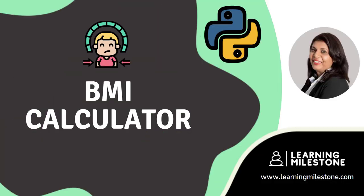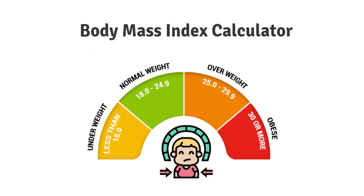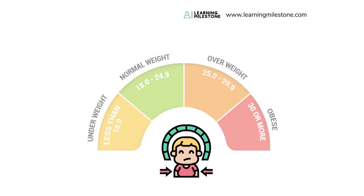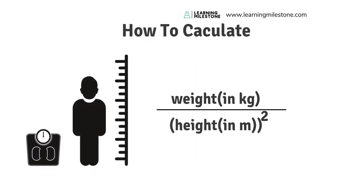Hey friends, you're with me Anuradha from LearningMilestone.com, and here we are going to create a simple BMI calculator based on Python. What is a BMI calculator? It is an indicator which tells adults whether they are underweight, normal weight, overweight, or obese. That is based on a certain value calculated using a formula based on the user's weight and height. The formula uses weight in kilograms and height in meters, though there can be slight variations when using different units.